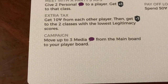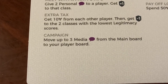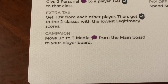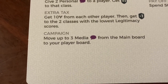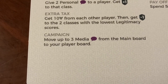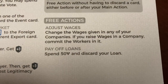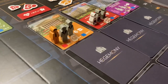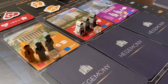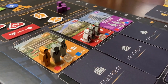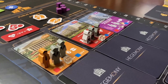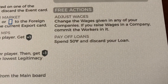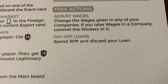The last basic action is to campaign: move up to three media from the main board to your own player board, so instead of being public where others can buy them, you have that media as personal tokens for election time. The free actions for the state are few: you can either adjust wages at your businesses — raising wages commits workers so you know you'll get their production — or you can pay off loans by spending 50 to discard a loan.